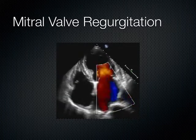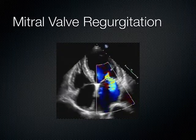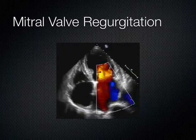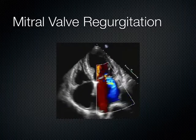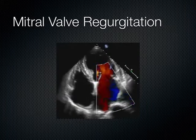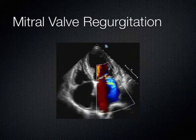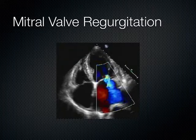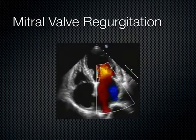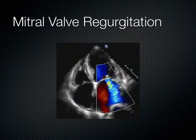This blue jet hits the back wall of the left atrium, which essentially means the patient has mitral valve regurgitation. We do this in the apical 4, not the parasternal long, because when you work with Doppler, you don't want the Doppler to be at a 90-degree angle with the angle of insonation. In the parasternal long axis the mitral valve is at about 90 degrees, whereas in the apical 4-chamber view you're closer to maybe 60 or even 45 degrees.